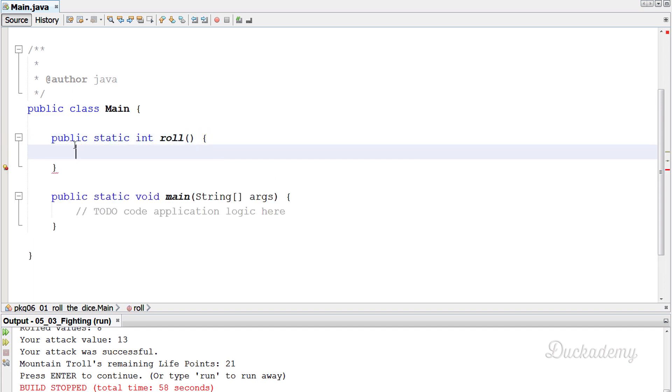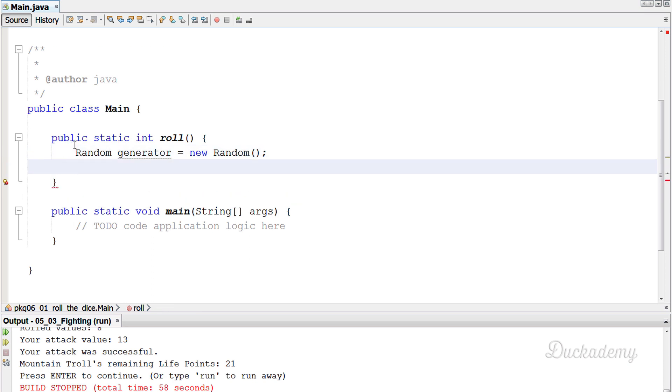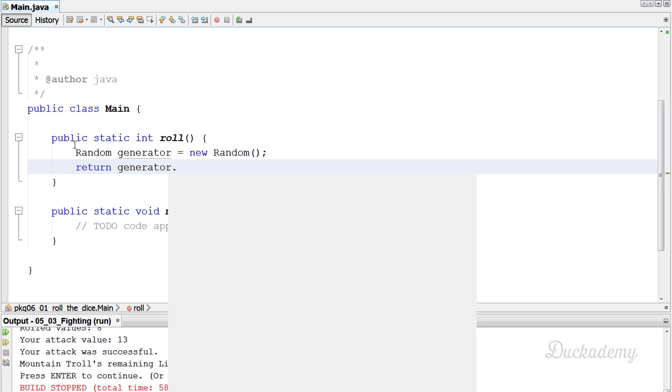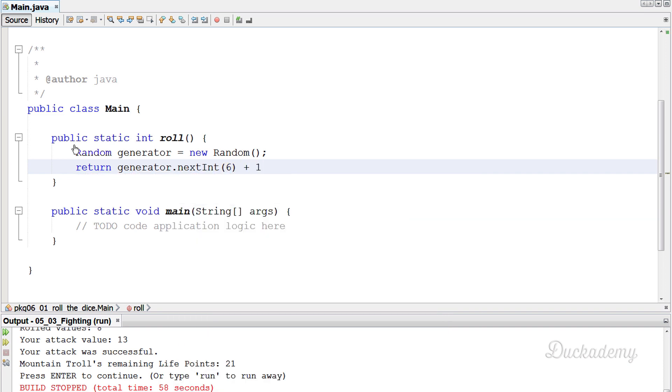So we tell the genie that roll the dice and we don't tell him any other data, but he replies with the number on the dice. Okay, so we are creating a random generator and then we import it and then we return with the generator dot next int. So next int 6 plus 1. So next int 6 generates a value from 0 to 5 and plus 1 generates 1 to 6.